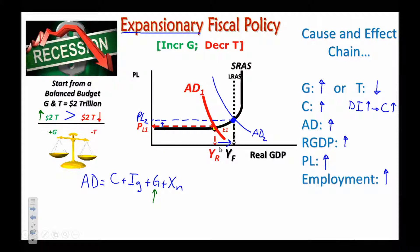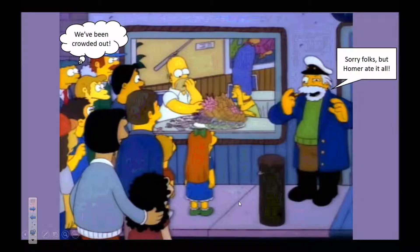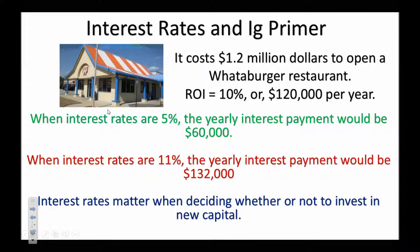Now we're going to demonstrate how expansionary fiscal policy is not quite as effective as theory would suggest. We're going to talk about crowding out. Imagine you go to the all-you-can-eat seafood buffet and there's one person monopolizing all of the food — Homer Simpson has eaten it all, and these other people have been crowded out.